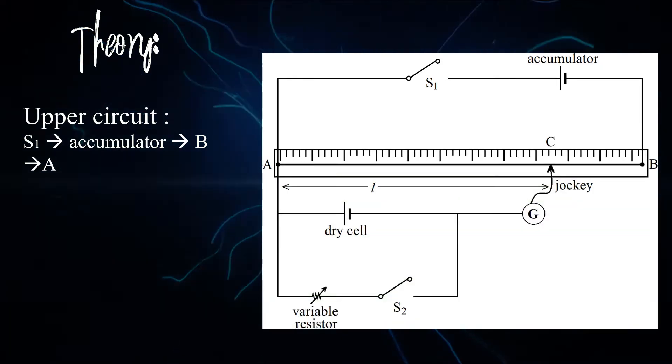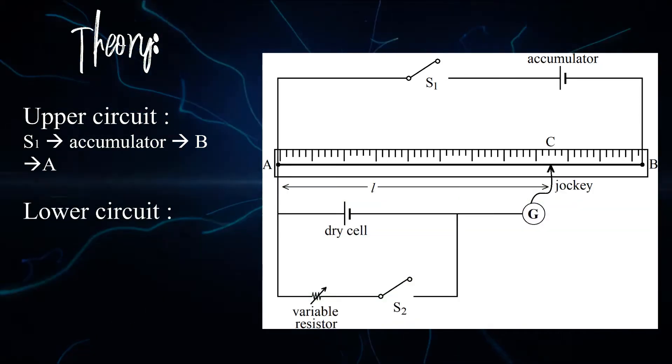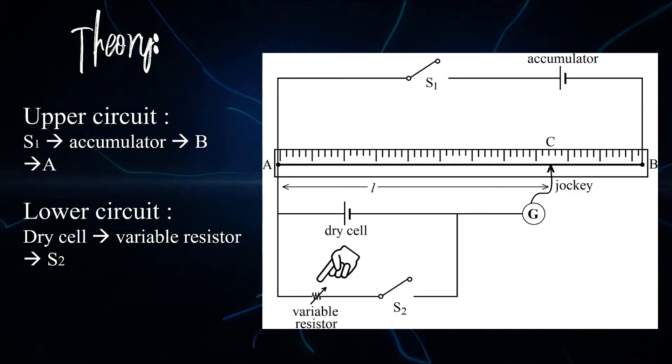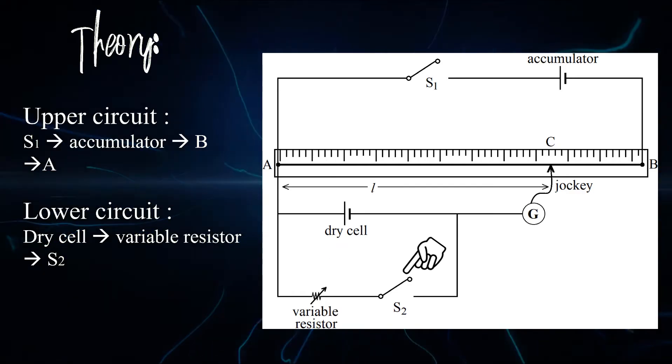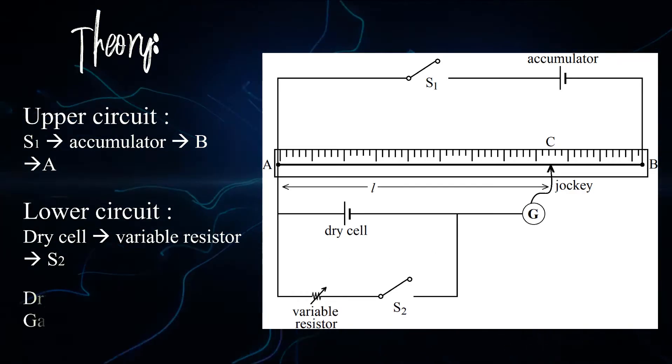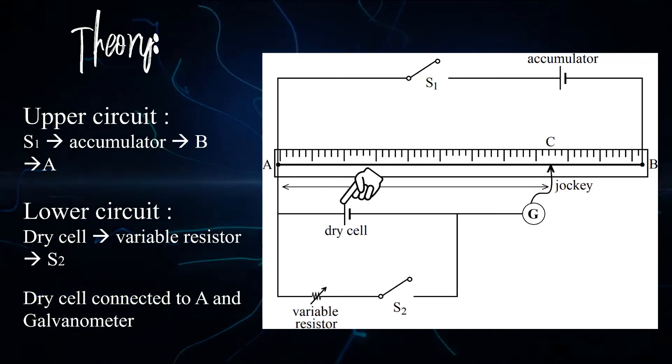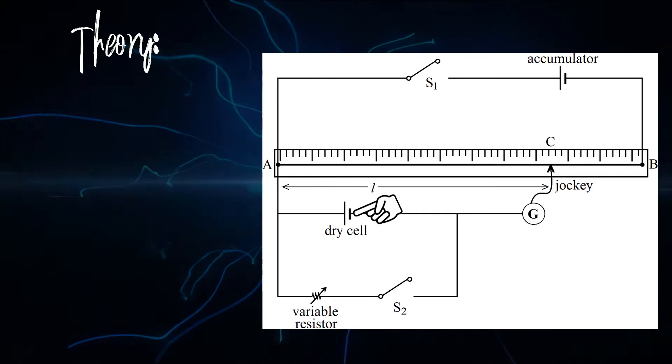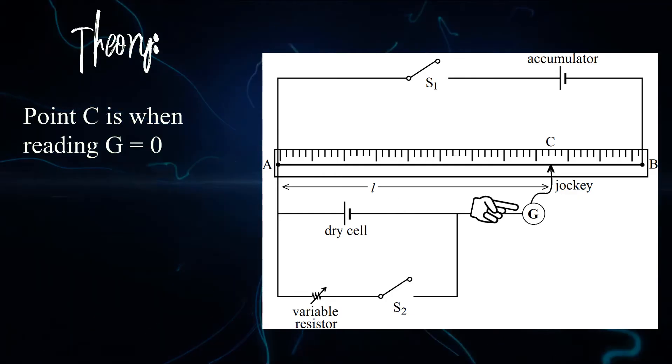The lower circuit arrangement starts with the dry cell, the variable resistors, and switch S2. The positive terminal of the dry cell then connected to point E, and the negative terminal is connected to the galvanometer.